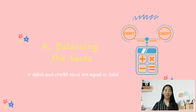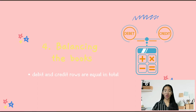The fourth step is balancing the books. When balancing books, we add all the debits and credits of an account to get the difference. Before that, a complete list of all accounts must be compiled by the bookkeeper, who is also required to ensure that debit and credit rows are equal in total. If not, then adjustments need to be made. After the adjustments, debits and credits must be tallied. This usually happens at the end of a quarter or year.